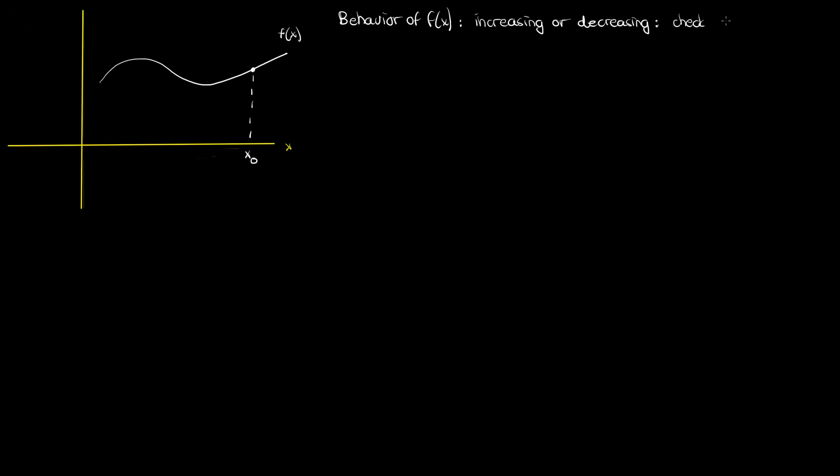In that case, I could determine the derivative of f of x, df by dx, and evaluate it at this point x naught. If df by dx is positive, then f of x is increasing at x naught. If df by dx is negative, then f of x is decreasing at x naught.